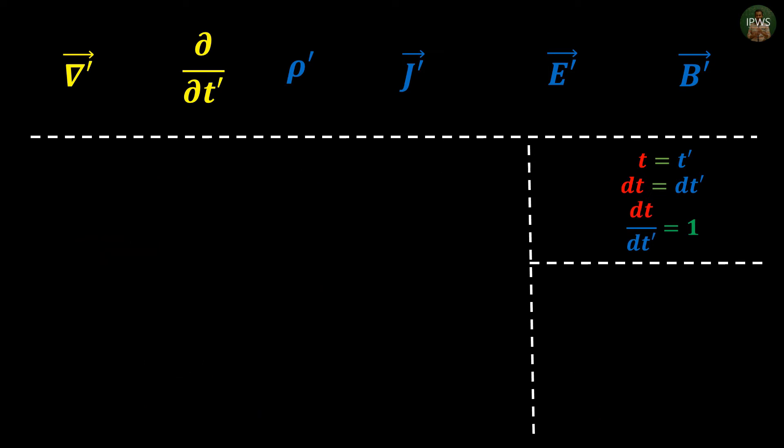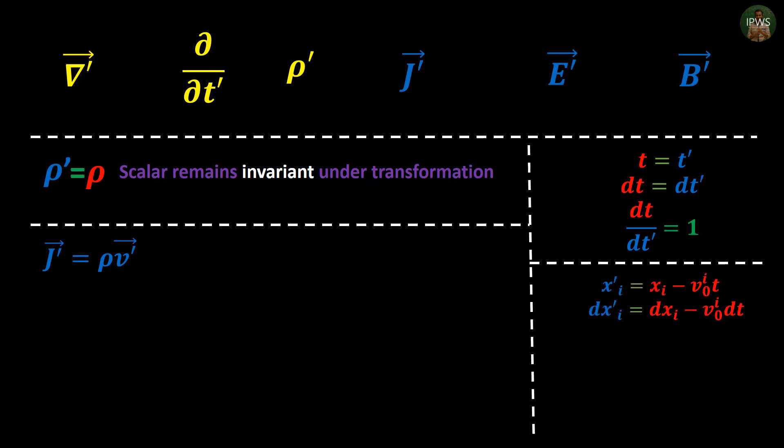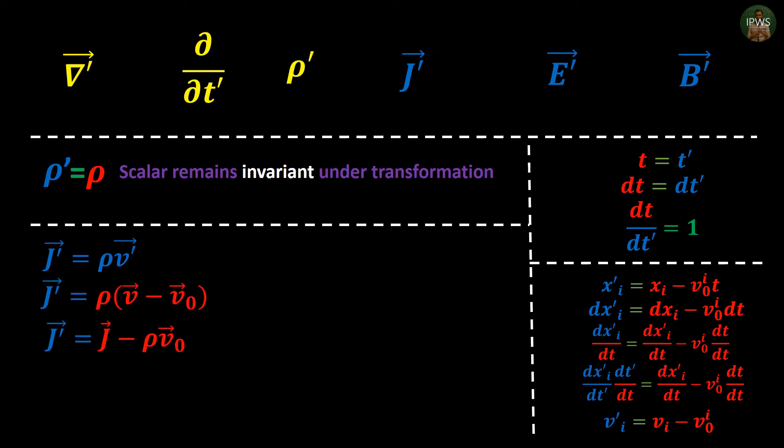Charge density being a scalar remains same, so ρ' will be same as ρ but not the current density. Since current density depends on the velocity, and using the same process but now with total derivative, we can find that v' = v - v0. Use that result in j' which gives us j' = j - ρv0. So now we have transformations for both our source terms.